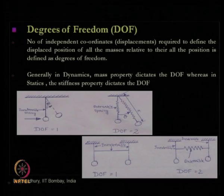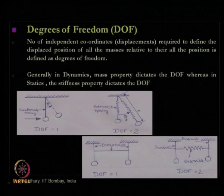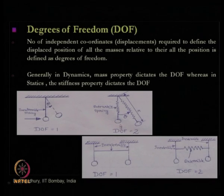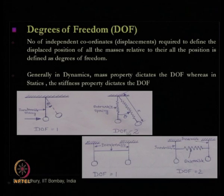We do not need the length L because L remains constant since the string is inextensible — that is why the degree of freedom in this problem is 1. But if we replace the inextensible string with an extensible string or a spring, then the degree of freedom changes to 2. In that case, we require minimum 2 coordinates: one is theta and another is the distance L or R, because both theta(t) and R(t) will change with respect to time and we need both to describe the displaced position.